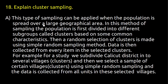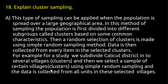Cluster sampling: This type of sampling can be applied when the population is spread over a large geographical area. In this method, the population is first divided into different subgroups called clusters based on some common characteristics. Then a random selection of clusters is made using simple random sampling, and data is collected from every item in the selected clusters. For example, for a study we subdivide Calicut district into several villages (clusters) and then select a sample of certain villages using simple random sampling.